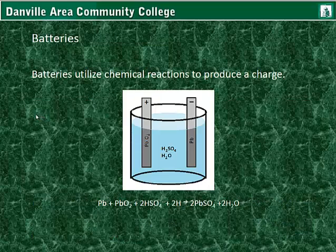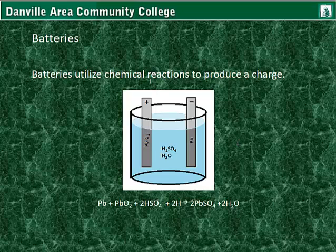Batteries utilize chemical reactions to produce a charge. Here's an example of an acid battery using sulfuric acid. There are two lead bars in this single cell battery. The reaction is shown below.